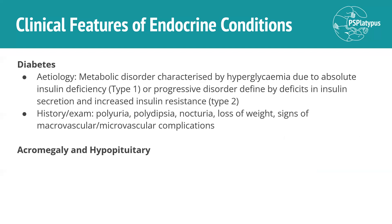A couple of other conditions tied to endocrine are diabetes — either type 1 or type 2. Type 1 involves an absolute insulin deficiency, and type 2 is a progressive disorder with deficits in insulin secretion as well as increased insulin resistance. Typical findings include polyuria, polydipsia, nocturia, and weight loss. You might also see signs of macrovascular and microvascular complications like peripheral neuropathy and retinopathy. The notes also briefly mention acromegaly and hypopituitarism, which are worth a look.